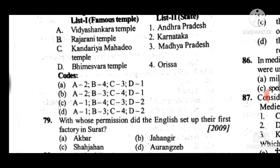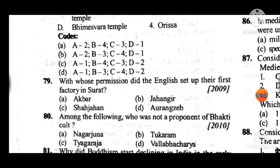Question 79: With whose permission did the English East India Company set up their first factory in Surat? Answer to question 79 is B: Jahangir. Question 80: Among the following, who was not a proponent of the Bhakti cult? Answer to question 80 is A: Nagarjuna.